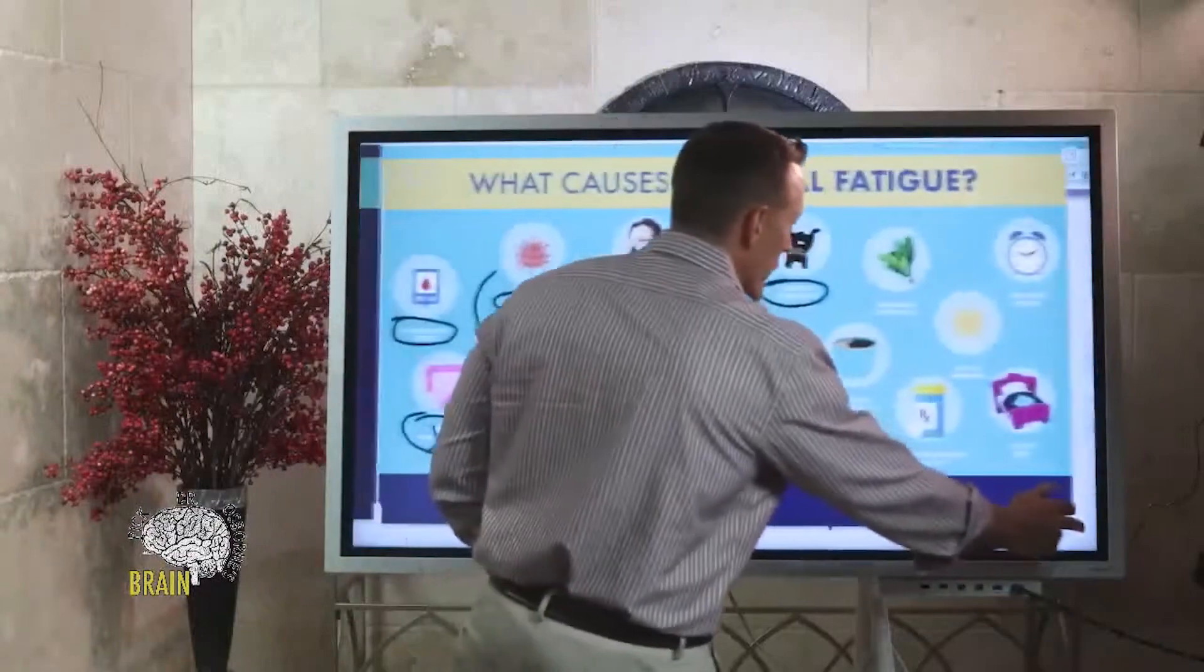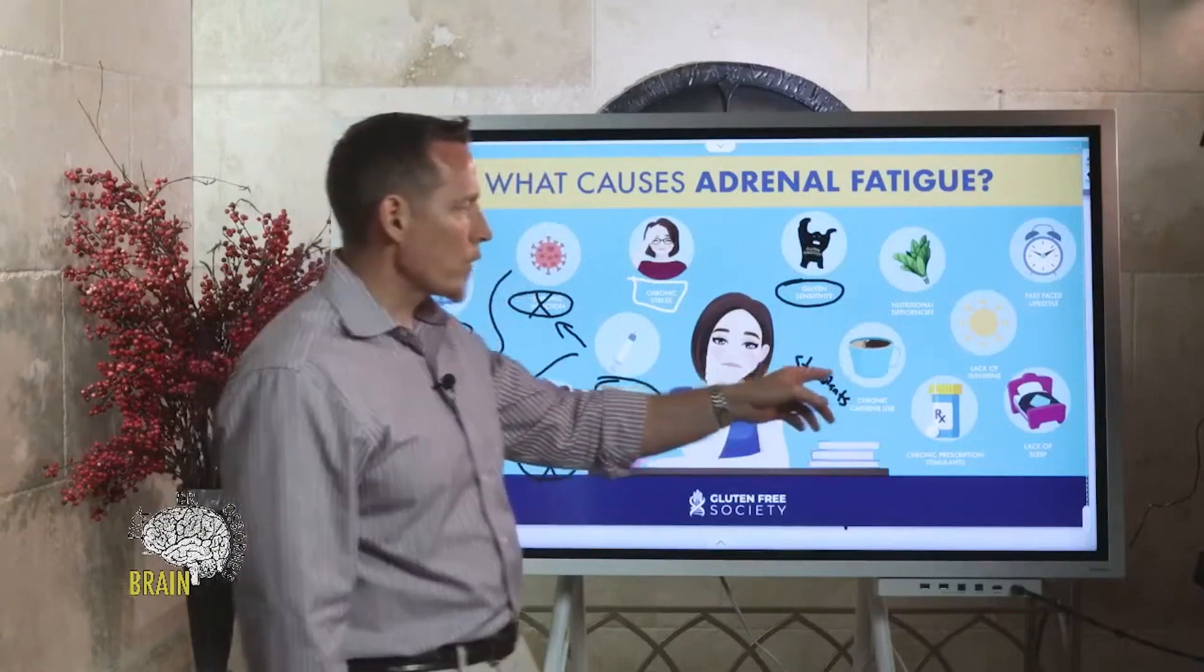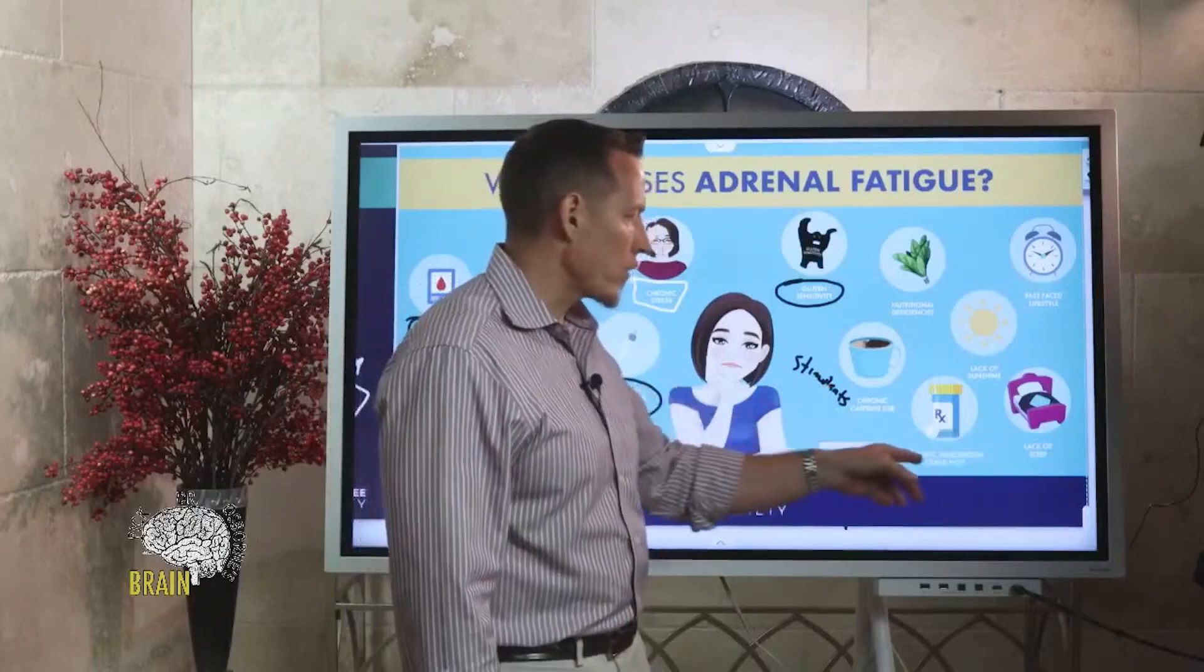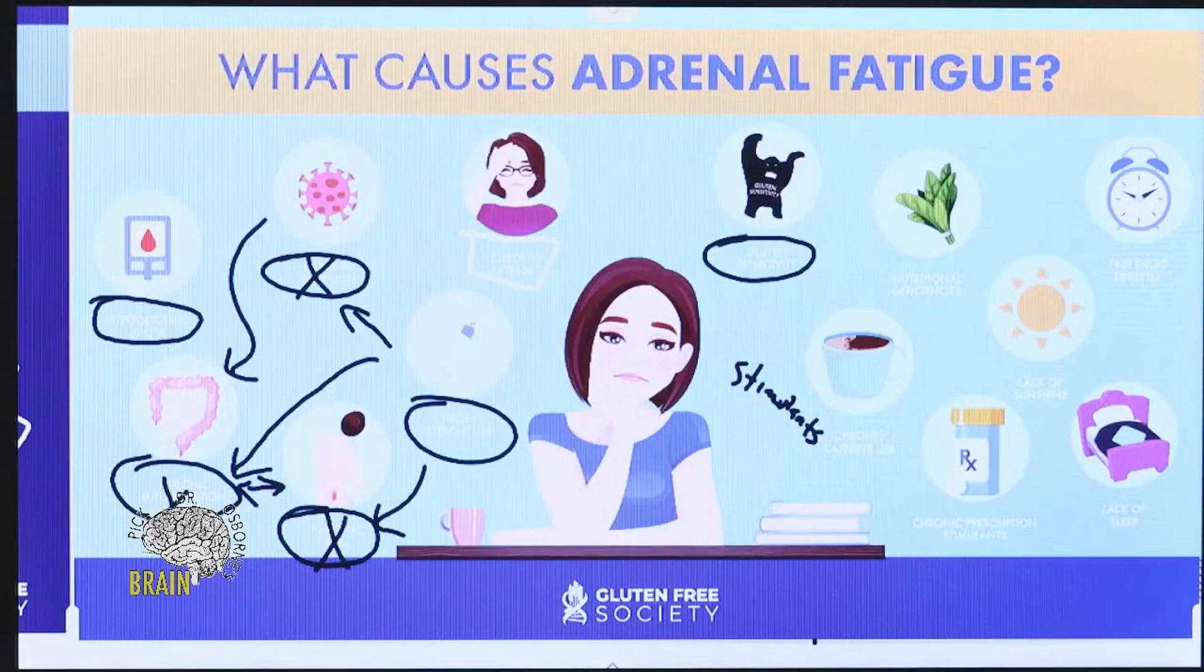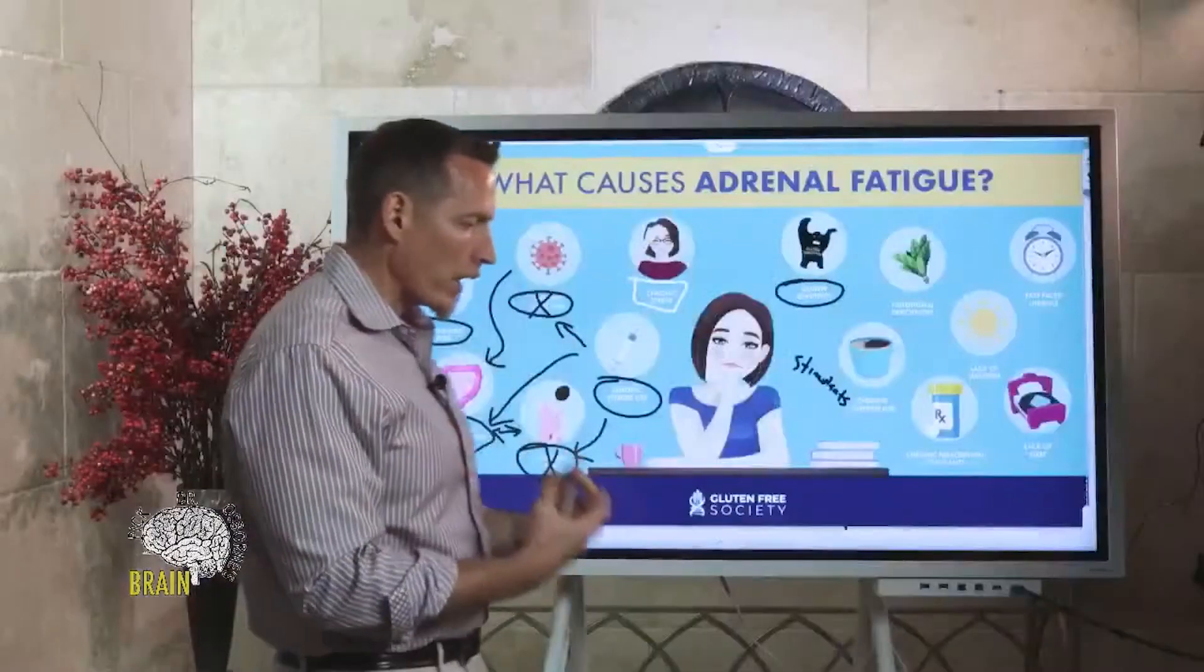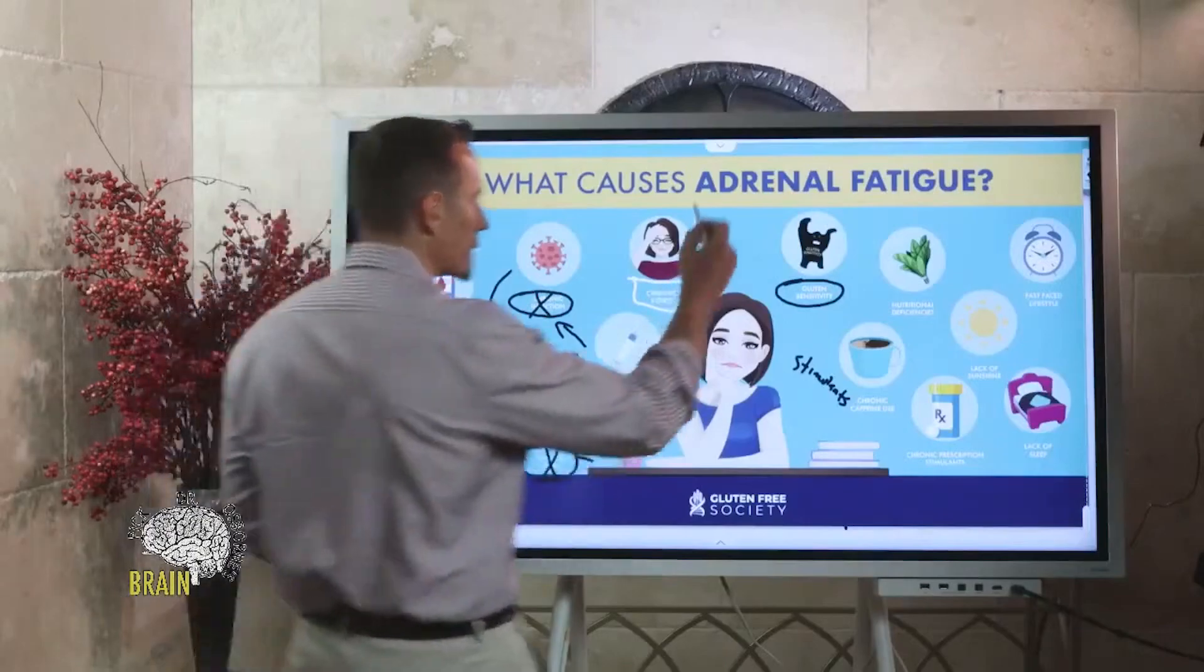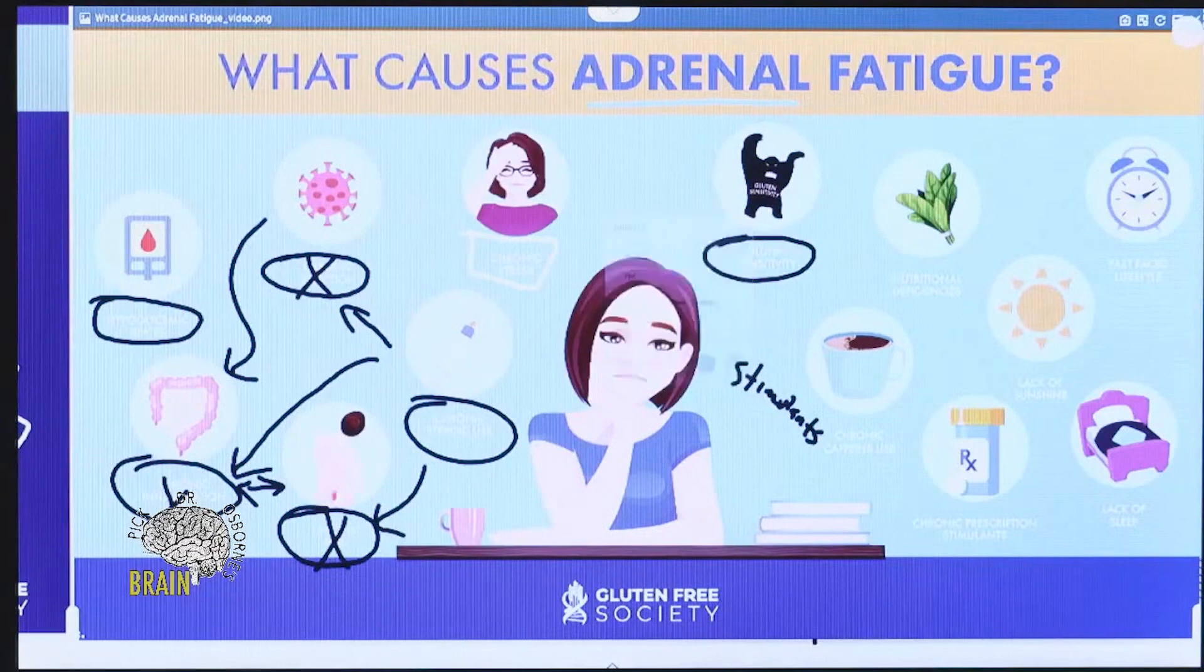Stimulants can cause hyper-excretion of cortisol, adrenaline, and noradrenaline, as well chronic prescription stimulants. Lack of sunshine - sunshine balances and helps with melatonin regulation. Then we get lack of sleep. Lack of sleep can really affect how your adrenal glands are capable of functioning. They need that recovery at night, and if you're not sleeping to get that recovery, you're going to develop long term this adrenal fatigue issue.